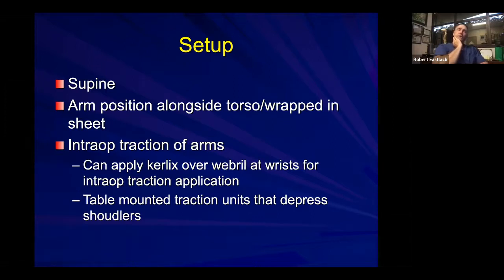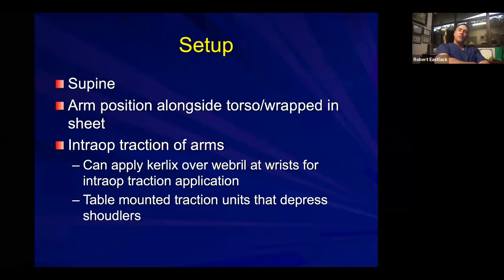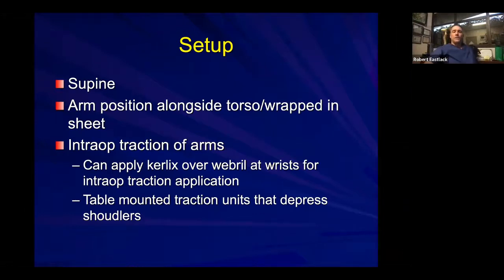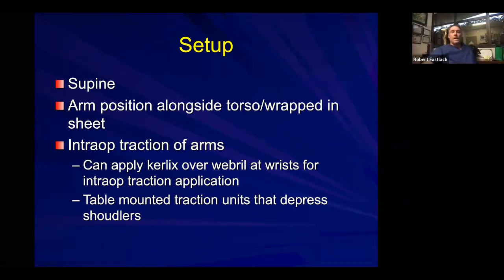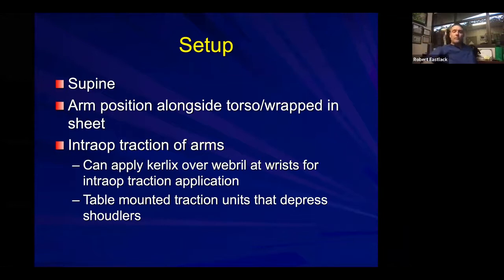There are different ways to do arm traction. We generally don't do much traction — certainly not statically — but if you wish to visualize the lower cervical spine, you can use a web rail at the wrist and a Curl-X strap extended down to the end of the bed, and intraoperatively someone can pull on those to depress the shoulders — the poor man's way of doing it. There are table-mounted traction or shoulder depression units, which are more expensive and probably more helpful for cervical disc arthroplasty.